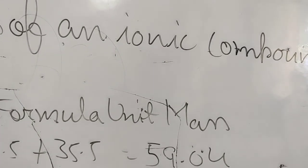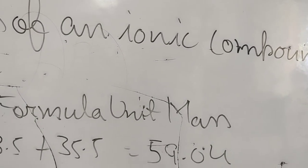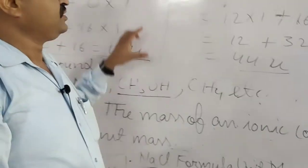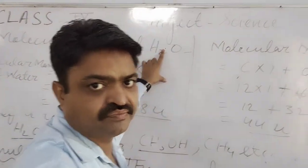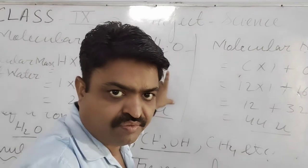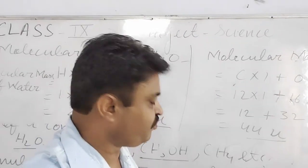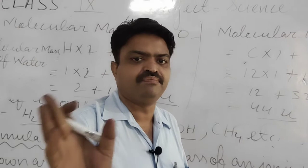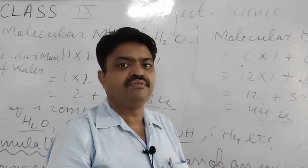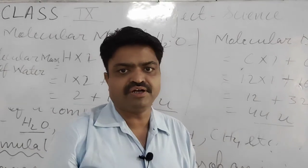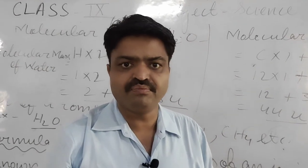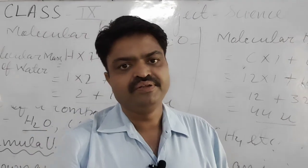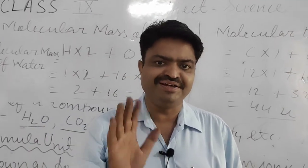So like this, you will get the molecular mass of covalent compounds and the formula unit mass of ionic compounds. Now try to do the different questions given in your book using this trick. Thank you very much and have a nice day.